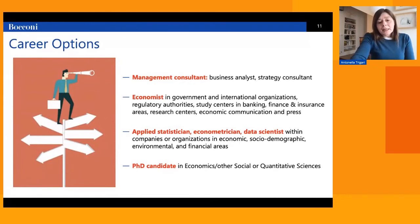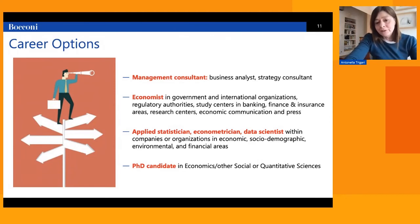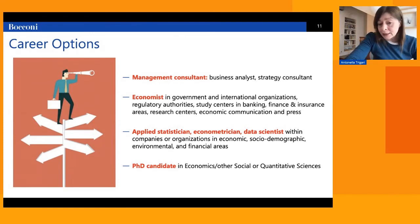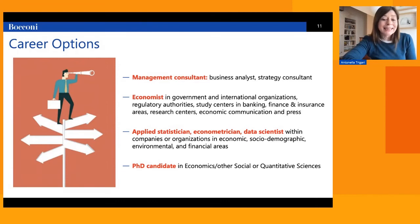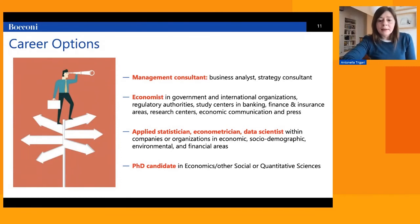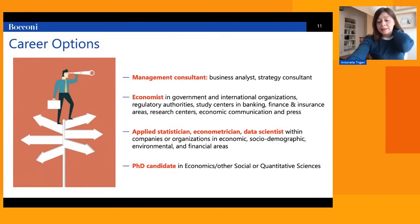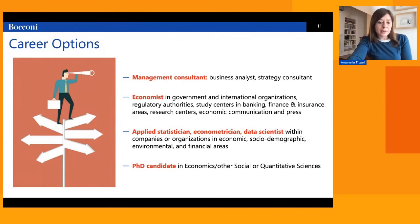A non-negligible number of the most influential strategy consultants or managers in Italy have been trained at ESS, previously called BESS when held in Italian. The second most common position is that of an economist, in a variety of environments and institutions. ESS students may also work as applied statisticians, econometricians, or data scientists, with growing demand for economists with knowledge of data science. Finally, students also, in relatively important numbers, continue as PhD candidates in economics or other social or quantitative sciences.